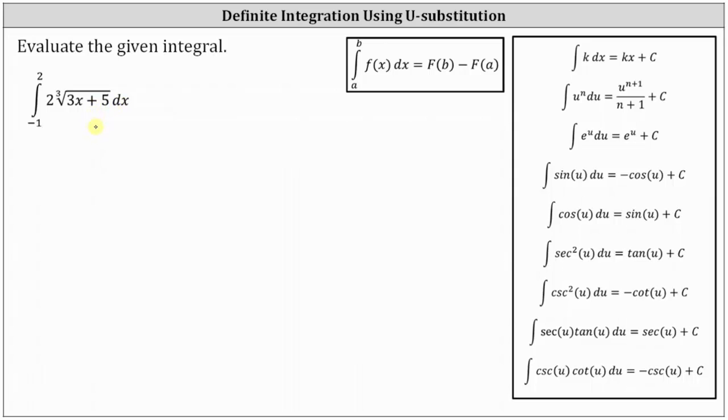The first step is to recognize we do need to perform u-substitution to evaluate the integral, where u is equal to the radicand of 3x plus five. So if we have u equals the quantity 3x plus five, then differential u is equal to the derivative of the quantity 3x plus five times dx, giving us du is equal to 3dx.